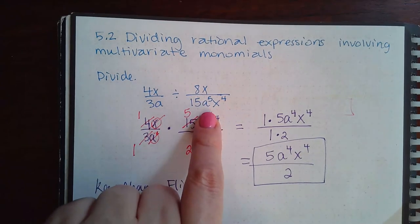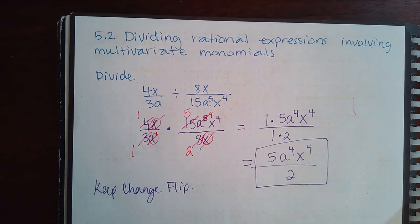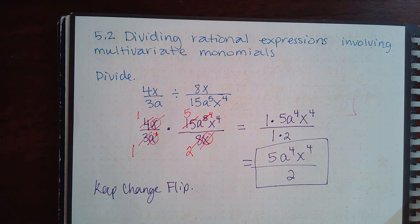We read left to right, so following the division symbol is this fraction, and that would be the fraction that gets flipped over when you change everything to multiplication. Once it's a multiplication problem, it works exactly the same as all the others—just simplify, reduce, and then you're done.